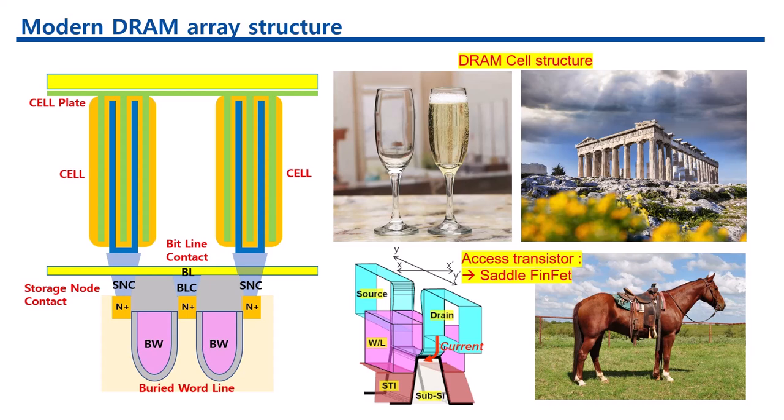3. Increased channel length and width. Although reducing channel dimensions is common in newer technologies, increasing channel length and width in this context is likely to improve control over leakage currents and enhance the stability and performance of the transistor. This adjustment helps mitigate some of the short channel effects while still aiming for high density.